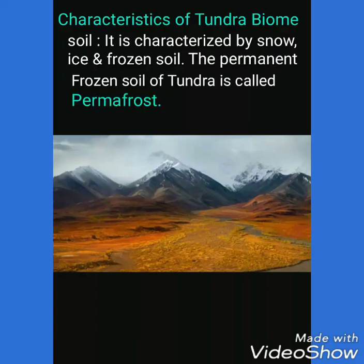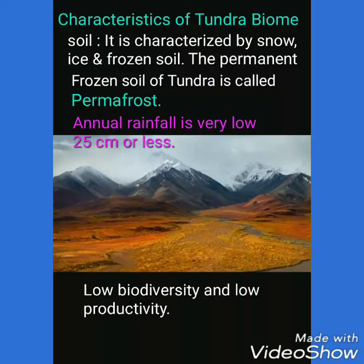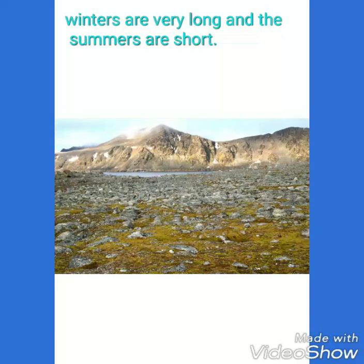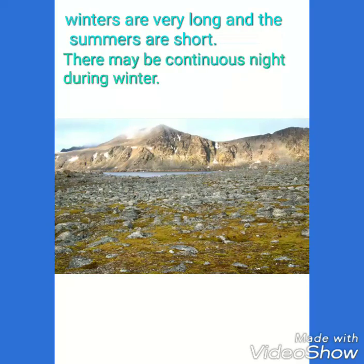The permanent frozen soil of the tundra is called permafrost. The annual rainfall is very low, which may be 25 centimeters or less. The biodiversity is also very low and productivity is also low.